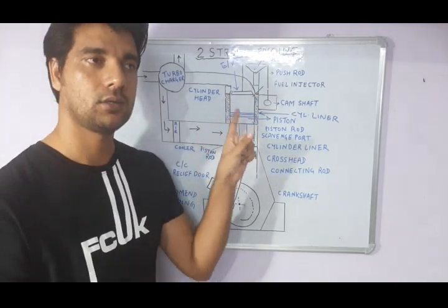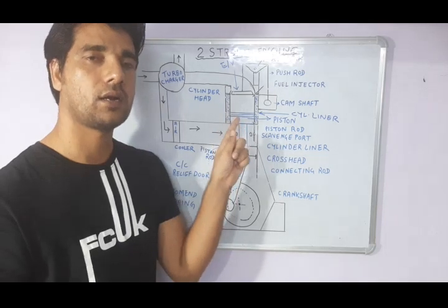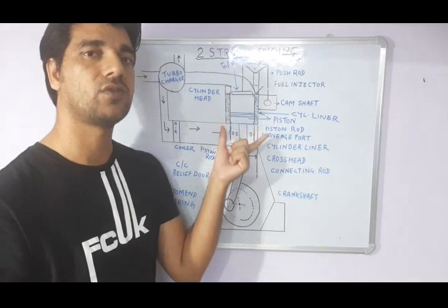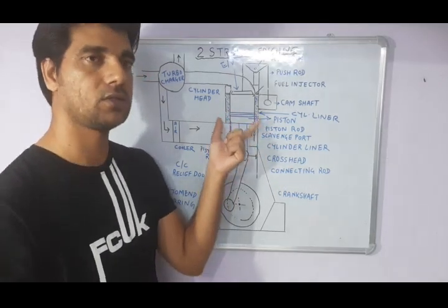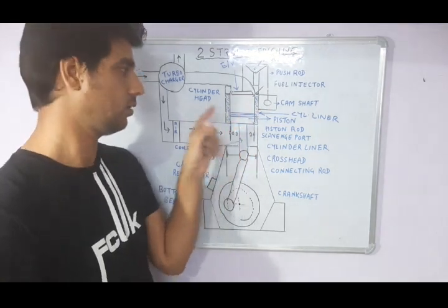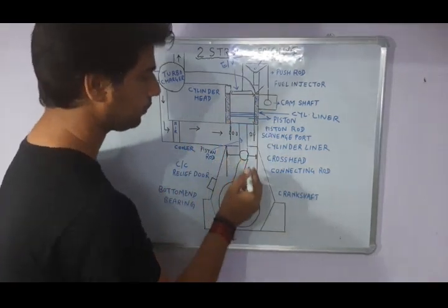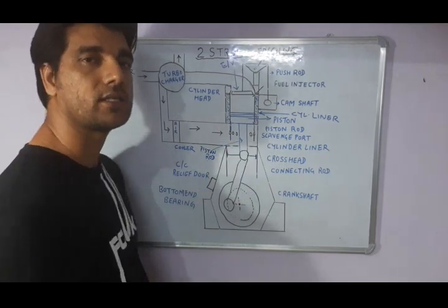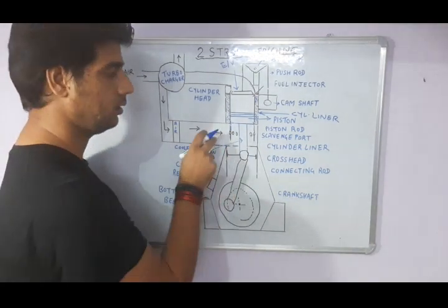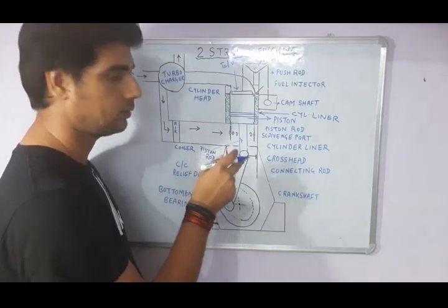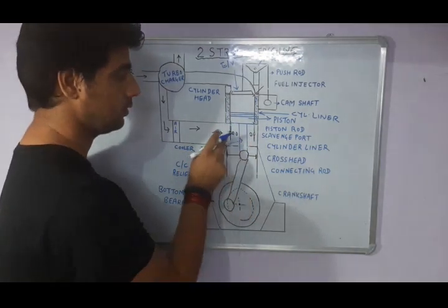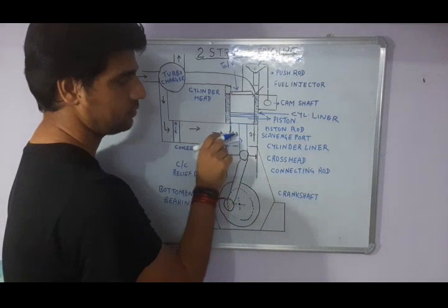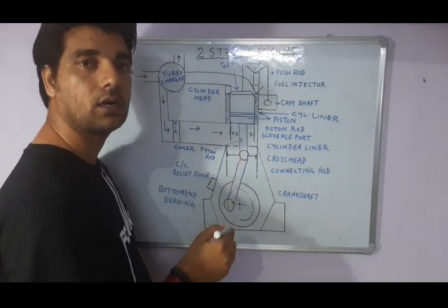The jacket is used to cool the cylinder, because when the piston moves inside the cylinder liner it generates heat. For cooling purposes, the jacket is filled with fresh water. This water is also used for the fresh water generator. You can see some holes here — these holes are known as ports, and they are used for the scavenging purpose. Fresh air goes through these ports into the cylinder for combustion.